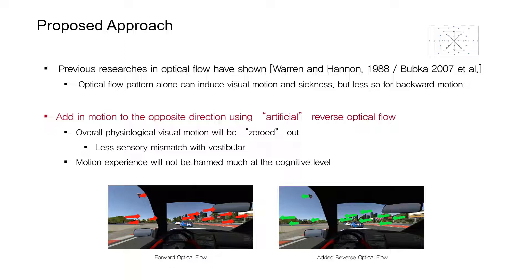We propose to add motion information in the opposite direction of the virtual navigation using optical flow. Since visual motion is perceived physiologically as the direction of optical flow of elements in the scene, we think that adding an artificial optical flow in the reverse direction of the motion can cancel out this perception, at least physiologically. This will ideally zero out the visual motion as well as the sensory conflict with the vestibular sense. The figure shows on the left the actual flow scene in red, and on the right the reverse flow added explicitly.